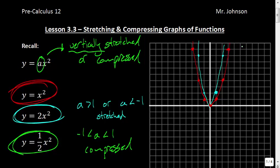Our green graph should fall somewhere in this region right here. Going back to our original function: we went over 1 up 1, but this is actually going to be over 1 up ½. Over 2, up 4 is going to be up 2. Over 3, up 9 — a little bit tougher — is going to be up 4½.